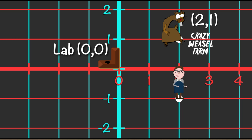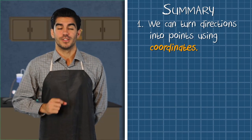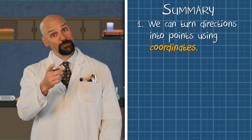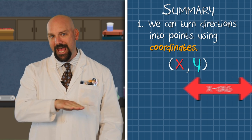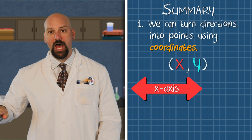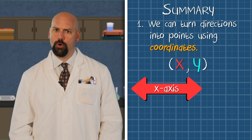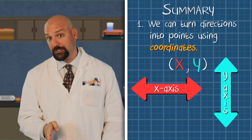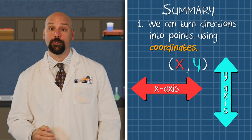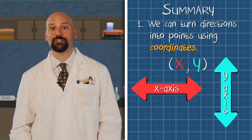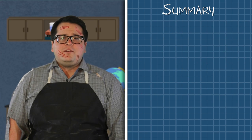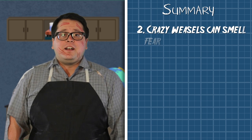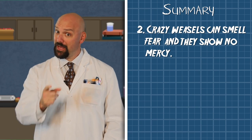So what did we learn today? I learned that you can turn directions into a specific point by using coordinates. That's right! The first coordinate is for the x-axis and we slide left and right. The second coordinate is for the y-axis and we jump forward or backward. Remember, Y to the sky. What else do we learn?